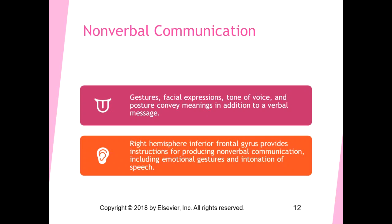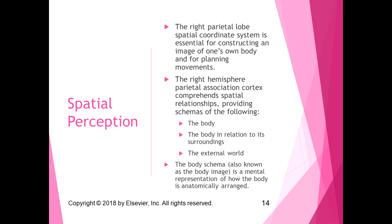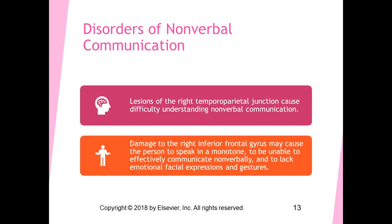Nonverbal communication includes gestures, facial expressions, tone of voice, and posture — they convey meaning in addition to a verbal message. The right hemisphere's inferior frontal gyrus provides instructions for producing nonverbal communication, including emotional gestures and intonation of speech. People with lesions in the right temporal-parietal junction may speak in a monotone, be unable to effectively communicate nonverbally, have difficulty understanding nonverbal communication, and lack emotional facial expressions and gestures — presenting with a very flat affect.